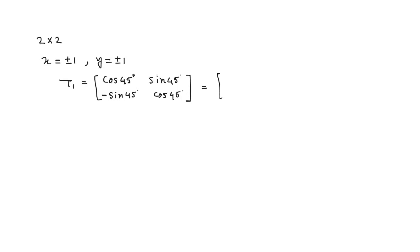If you put those values, that is 1 divided by root 2, 1 divided by root 2, minus 1 divided by root 2, 1 divided by root 2. This is equal to T1.